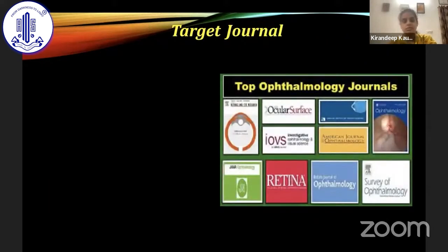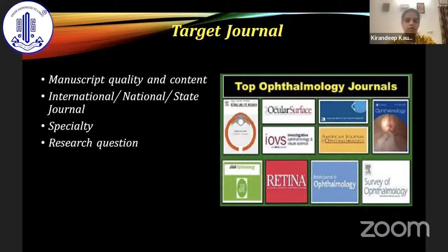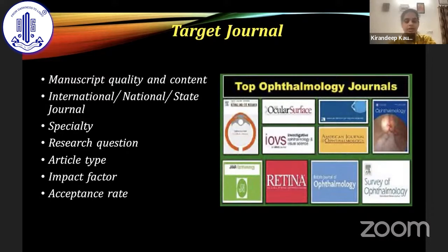Next is finding out the target journal. There is a long list of ophthalmology journals, and we need to assess the quality of our manuscript and the content we have in hand. Then we decide whether to go for an international, national, or state journal. Finding the correct subspecialty journal for your manuscript is important. We need to see the journal's scope — the research question should fit the journal's interests — and consider what article type we want to publish, the impact factor, acceptance rate, and turnaround time. A one-year wait without hearing back from a journal will definitely demotivate you.